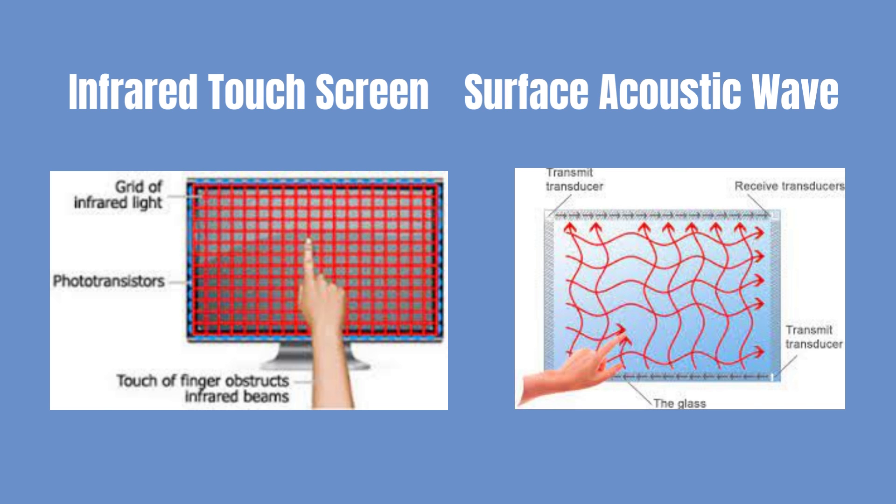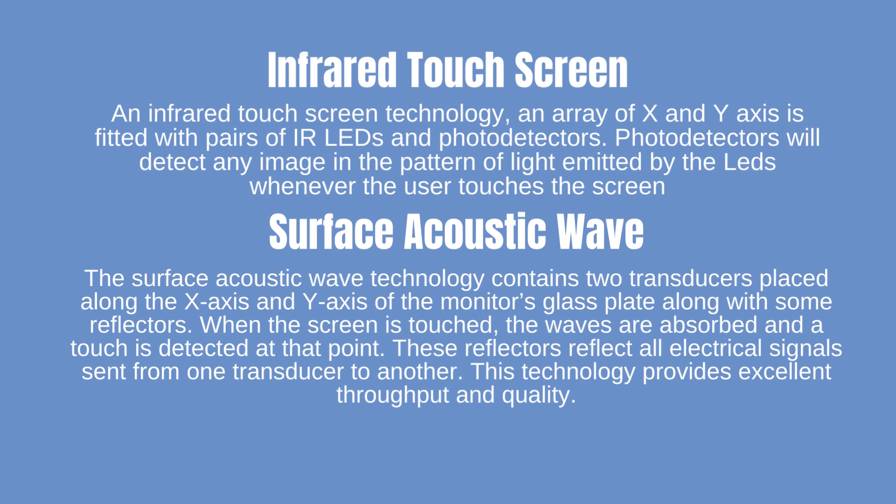An infrared touchscreen uses an array of x- and y-axis fitted with pairs of IR LEDs and photodetectors. Photodetectors detect any disruption in the pattern of light emitted by the LEDs whenever the user touches the screen. Surface acoustic wave technology contains two transducers placed along the x-axis and y-axis of the monitor's glass plate along with reflectors. When the screen is touched, the waves are absorbed and a touch is detected at that point. These reflectors reflect electrical signals from one transducer to another. This technology provides excellent throughput and quality.